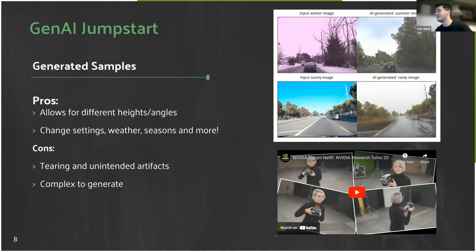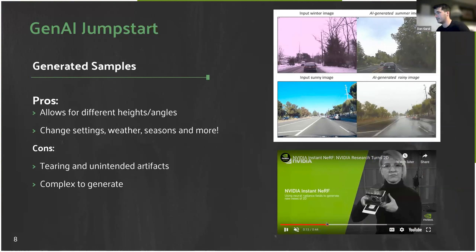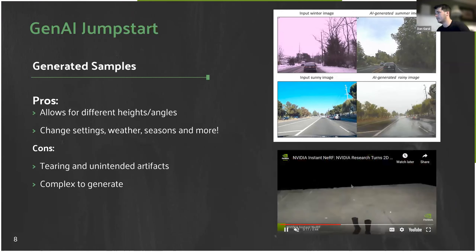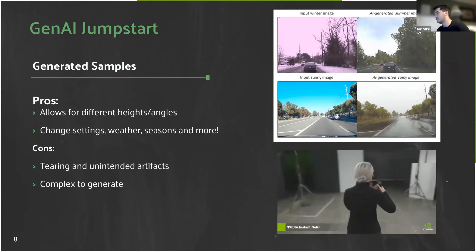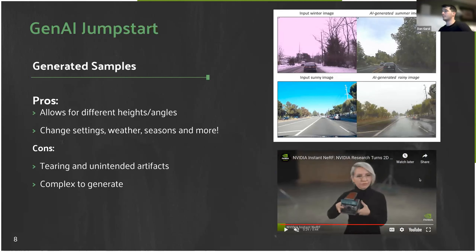Now that we can have generated samples, we can apply gen AI to pictures to make it winter, rainy, or sunny, and incorporate these different conditions into your dataset to recycle old drone data. You can also change the height and angle. As Nvidia has shown, you can take a set of pictures, build a 3D environment using gen AI models by stitching together all the different angles, and then change the height, angle, weather, and seasons — things we previously couldn't do with data. There is some tearing in images, but there's a lot you can get out of your data that previously wasn't there.